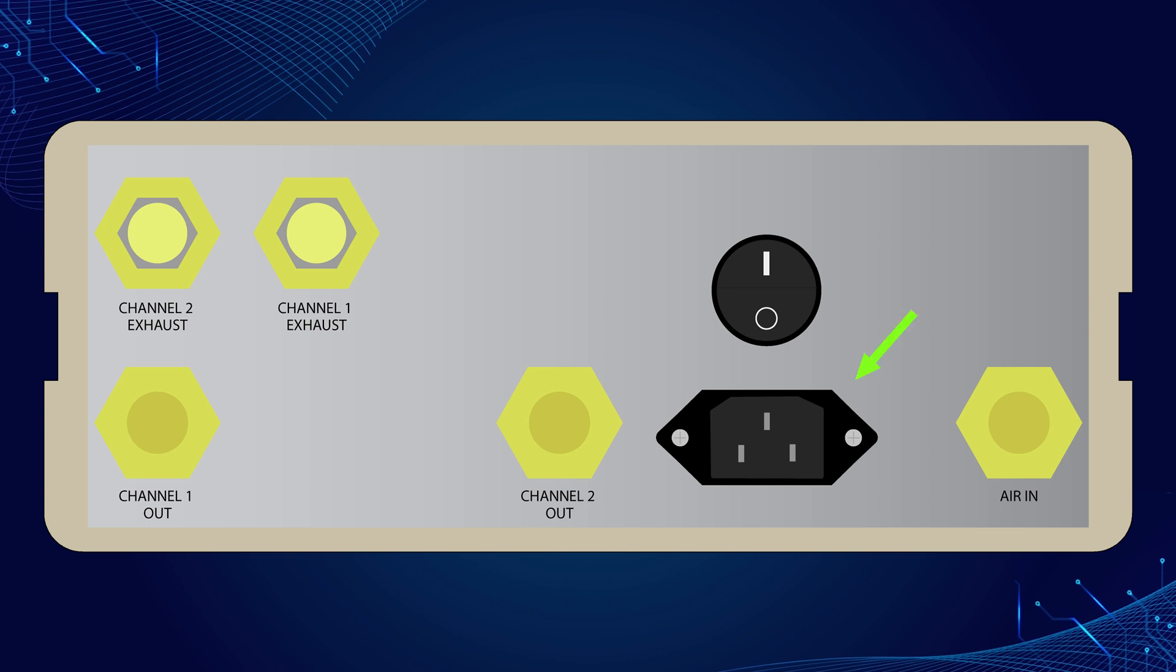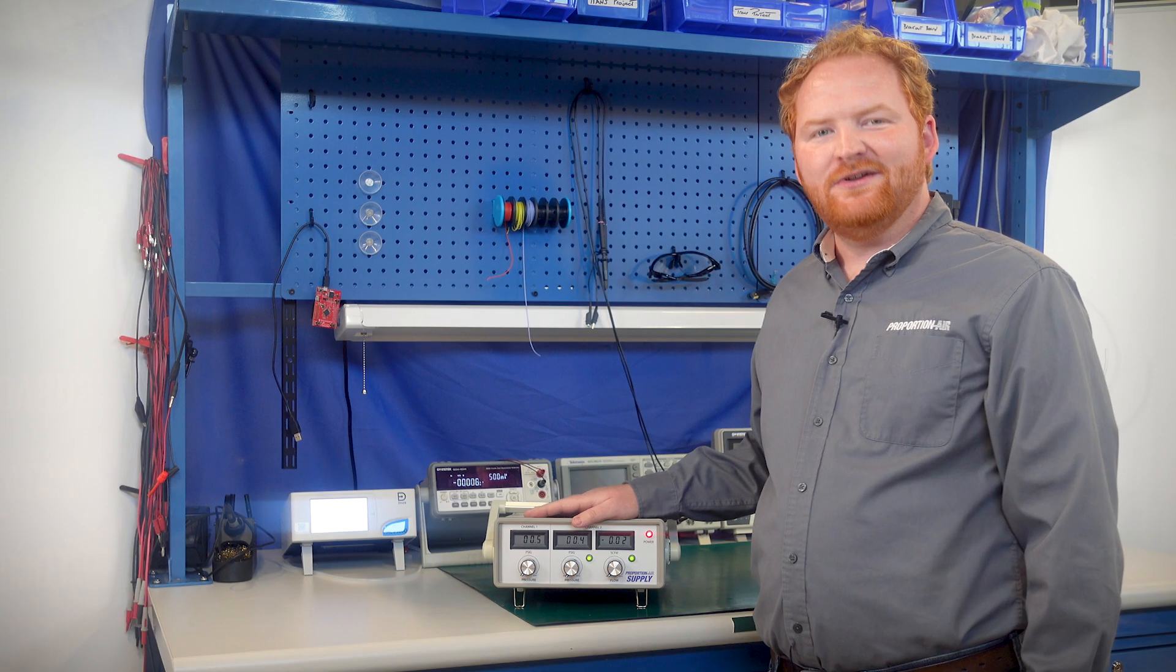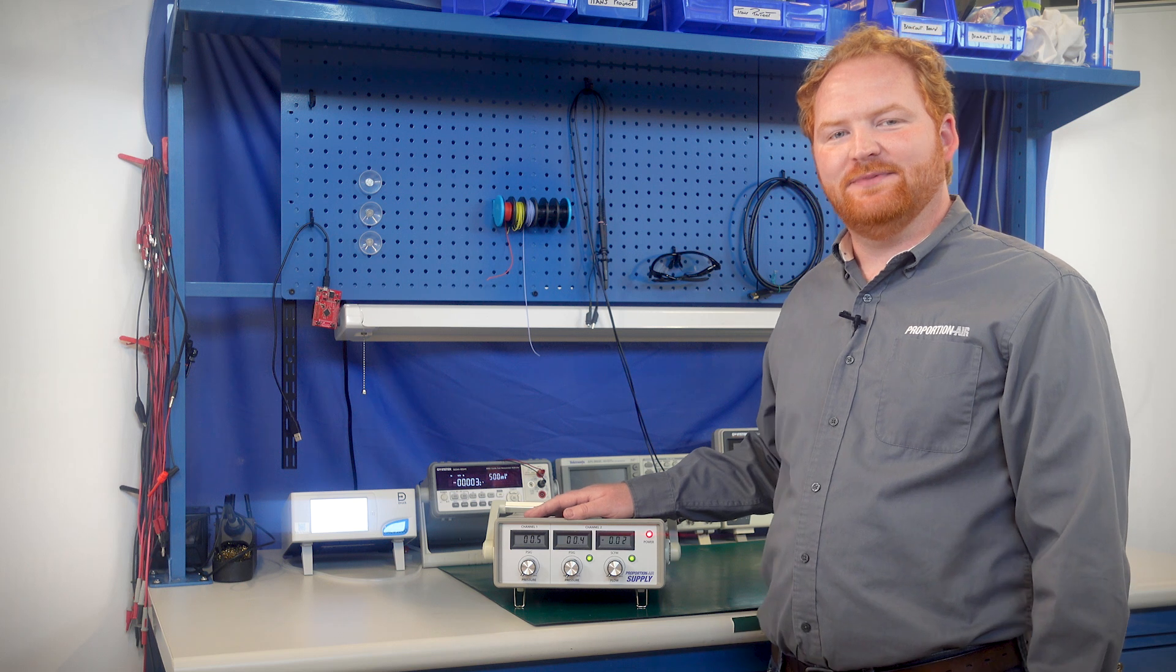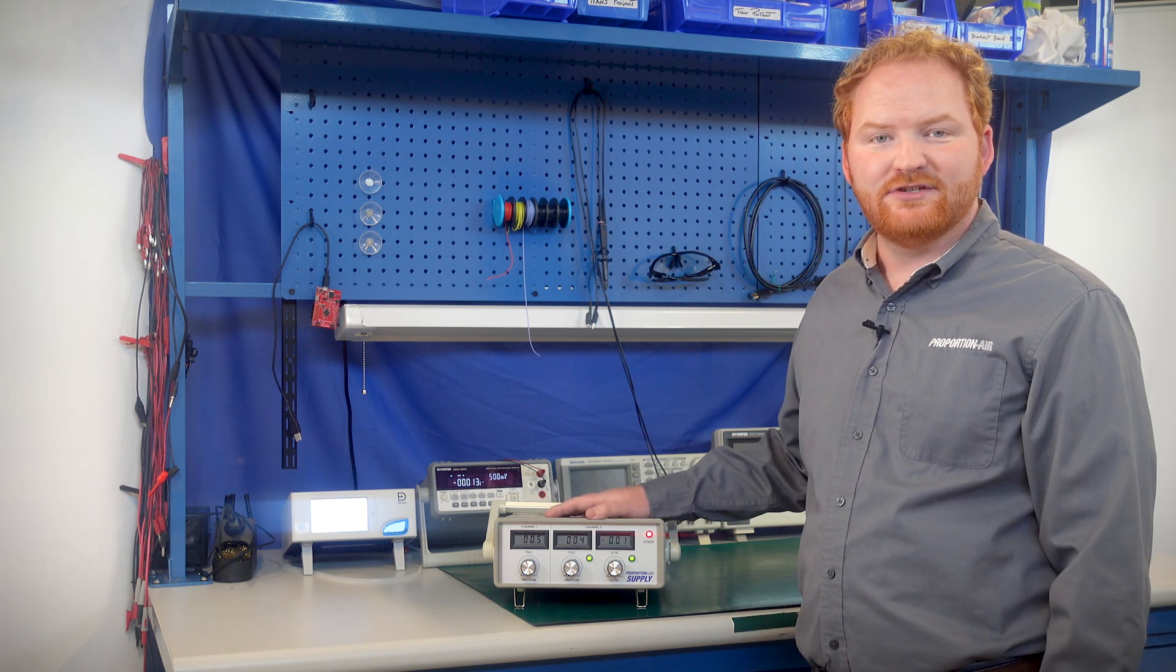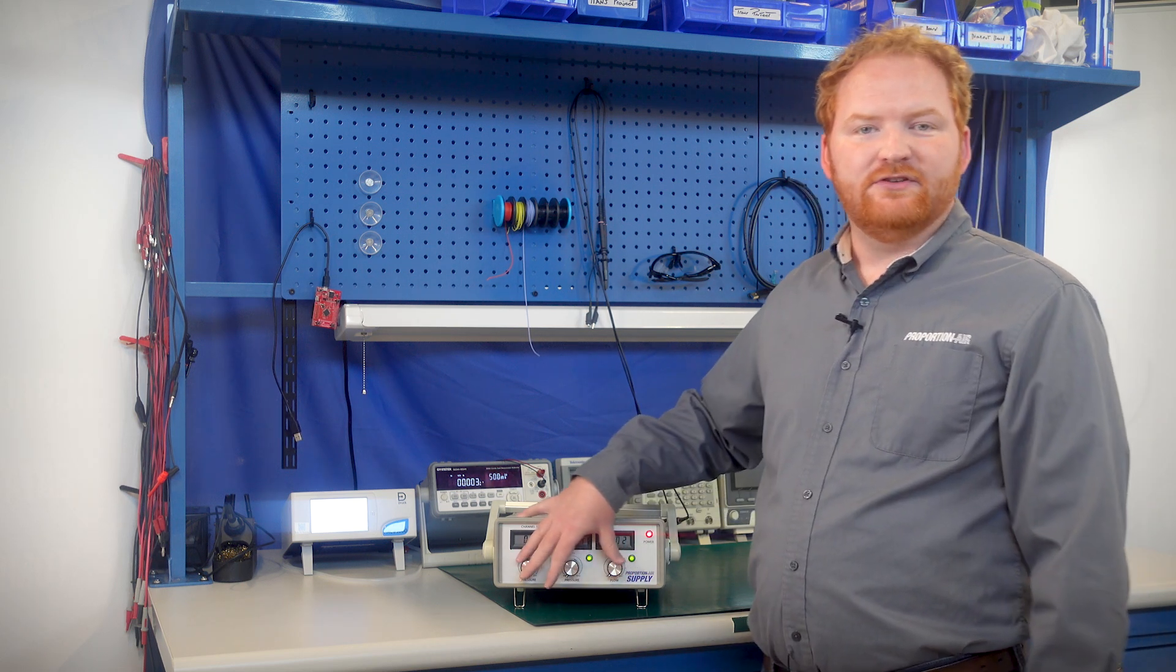You have your air inlet, your power supply, your two exhausts, and an outlet for each channel. One of the primary benefits of the Proportion Air Supply is that it is an all-in-one package.